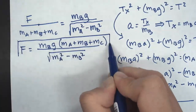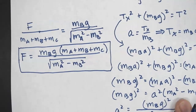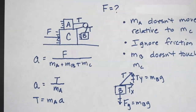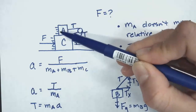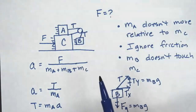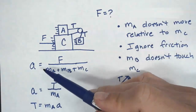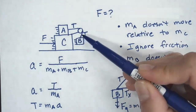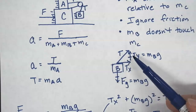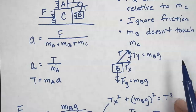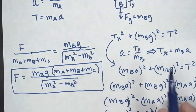The key to this problem is, first, choosing your system carefully — whether treating all boxes together or individually. Second, recognizing that if objects don't move relative to each other, they share the same acceleration. Third, understanding that the tension on box B acts at an angle, allowing use of the Pythagorean theorem. Finally, connecting the acceleration equations to solve for the force.